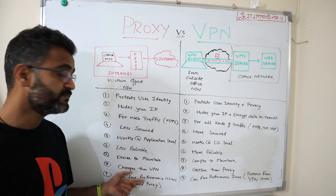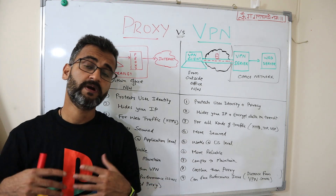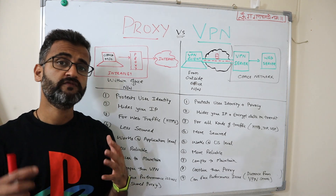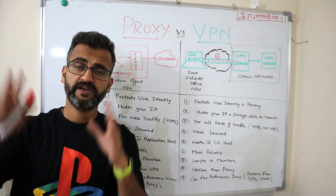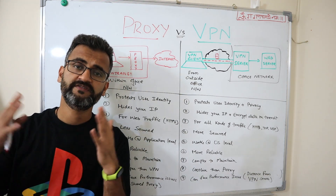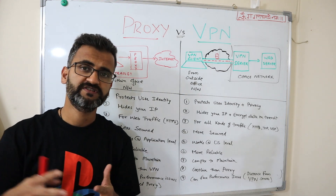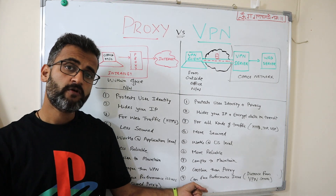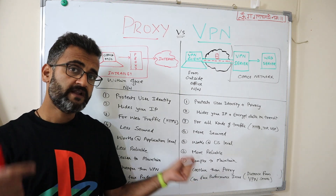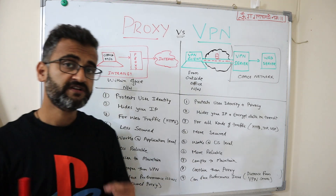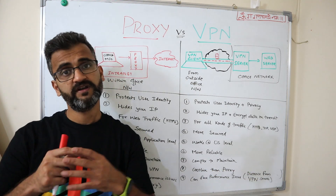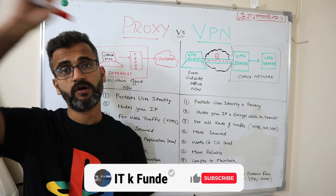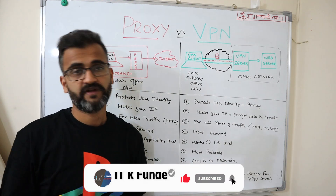One similarity is that both can face performance issues, but for different reasons. A proxy can face performance issues if you're using a shared proxy server where many requests are sent simultaneously. A VPN can face performance issues based on the distance between your VPN client and VPN server — if that distance is too large, routing through the VPN server to the actual web server can introduce significant latency.